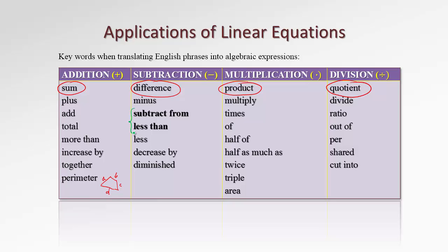I want you to focus on two exceptional phrases that go backwards. For example, 'B subtracted from A' means I have something to subtract B from — that something is A — so the expression is A minus B. Similarly, 'B less than A' also translates into A minus B, because B is less than the original number A. However, if we use just the single word 'less' — for example, 'B less A' — we go left to right, giving B minus A. The only backward-structure phrases are 'subtract from' and 'less than'; otherwise we read left to right.